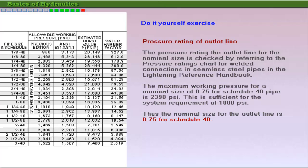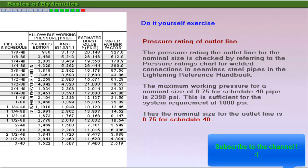Refer to the pressure ratings chart for welded connections in seamless steel pipes in the Lightning Reference Handbook to determine the pressure rating of the pump outlet line. The pressure rating of 2,398 PSI of the pipe is more than the maximum pressure of 1,000 PSI in the system. Hence, a pipe size of three-quarters of an inch for schedule 40 is suitable for the pump outlet.